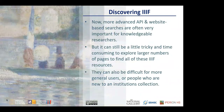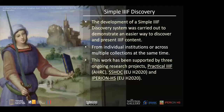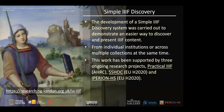More advanced APIs and website-based searches are important for knowledgeable researchers, but it can be tricky and time-consuming to explore large numbers of pages to find IIIF resources — and difficult for general users new to an institution's collection. The simple IIIF discovery system was developed to demonstrate an easier way to discover and present IIIF content from individual institutions or across multiple collections. This work was supported by the Practical IIIF project funded by AHRC and the SSHOC and Hyperion HS projects funded by the EU Horizon 2020 program.